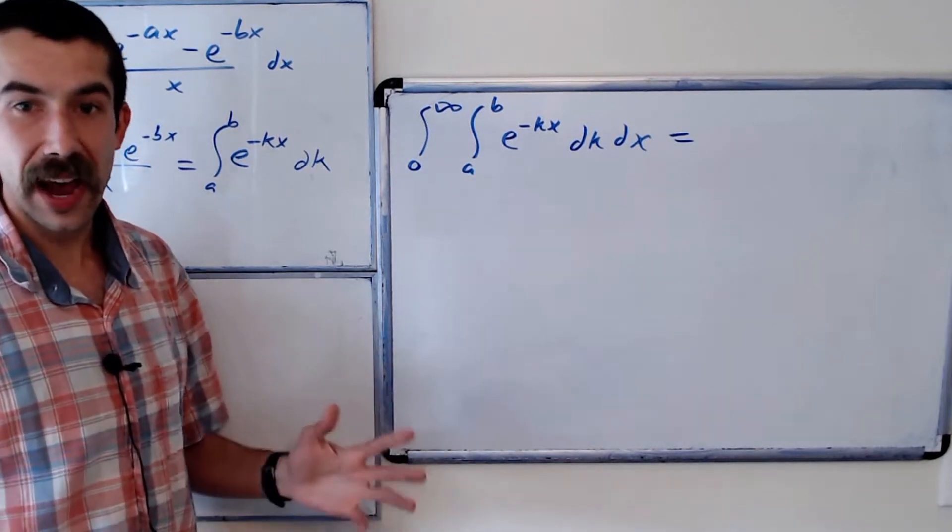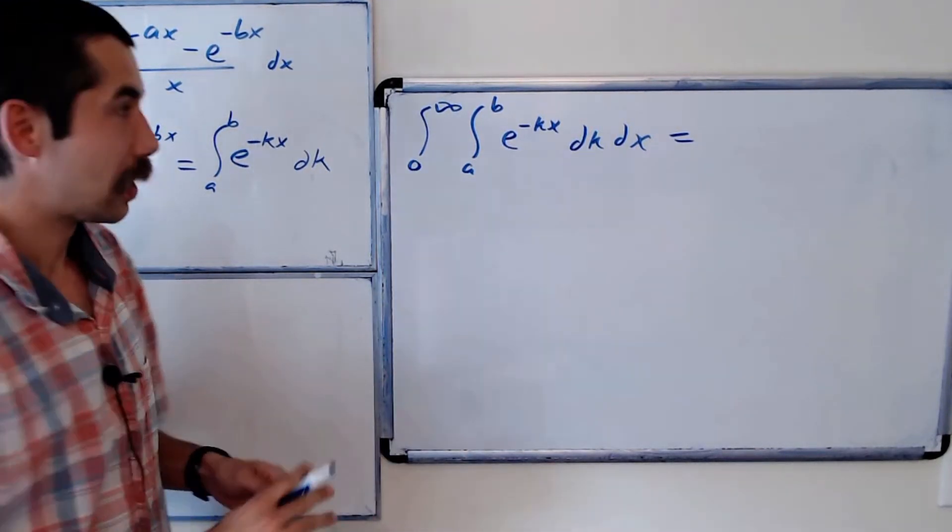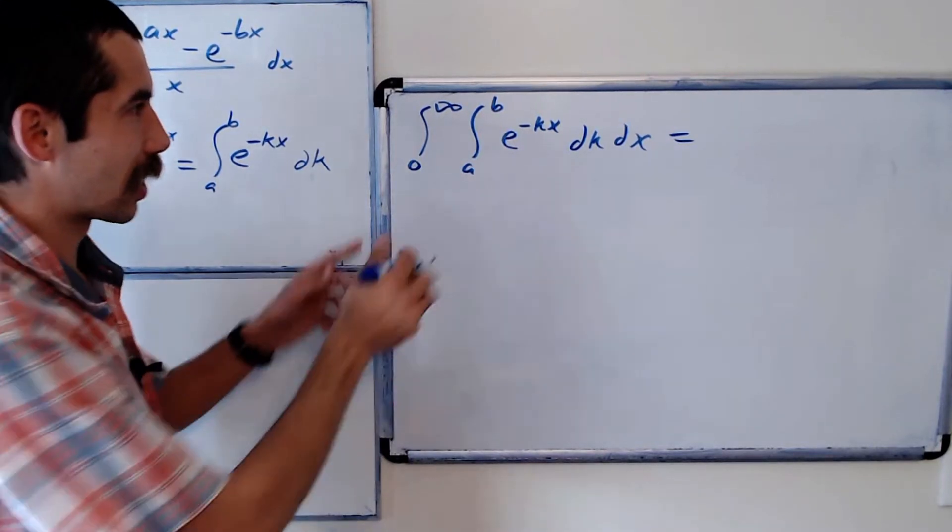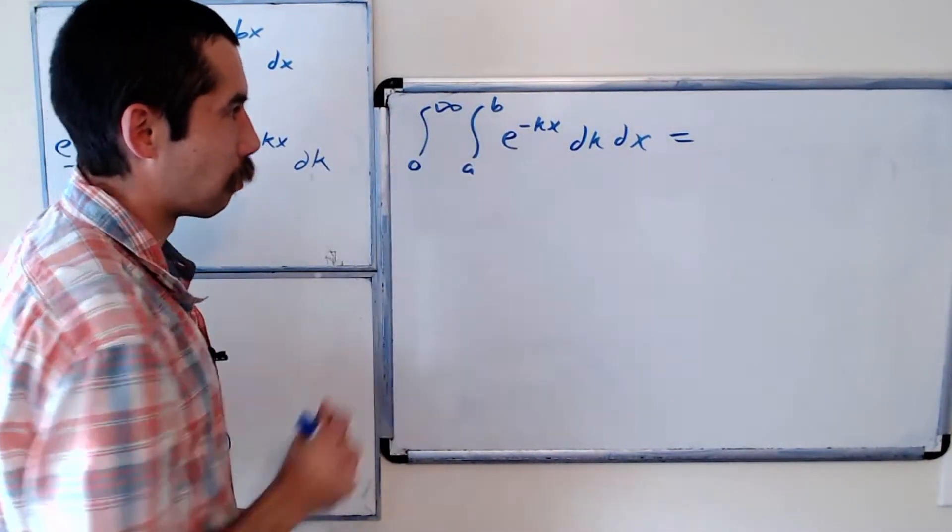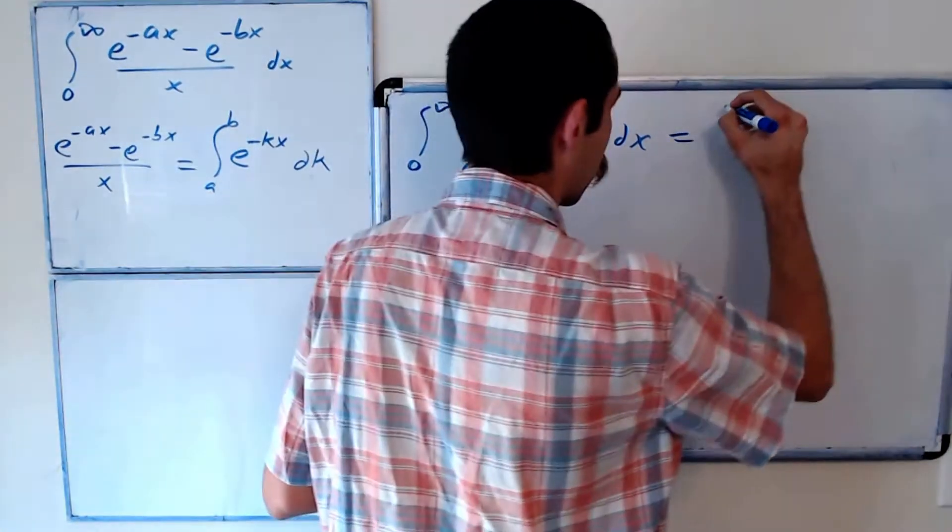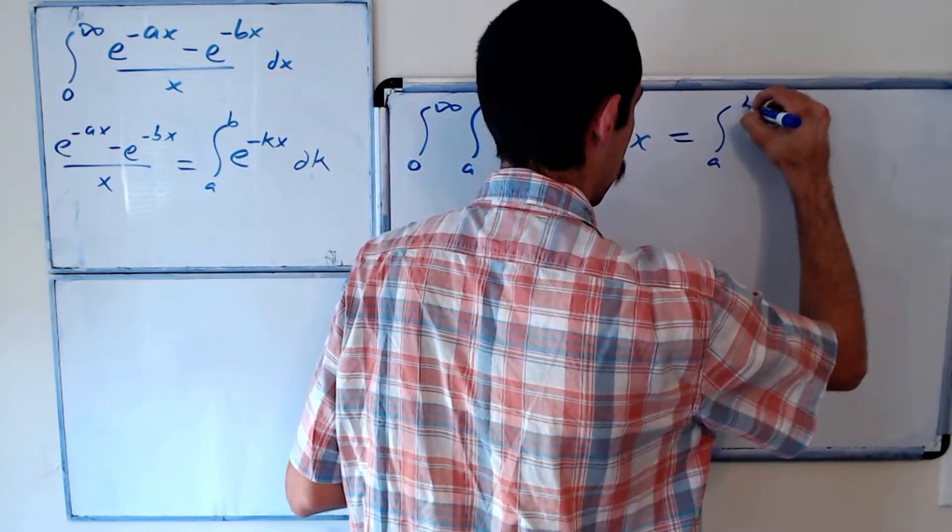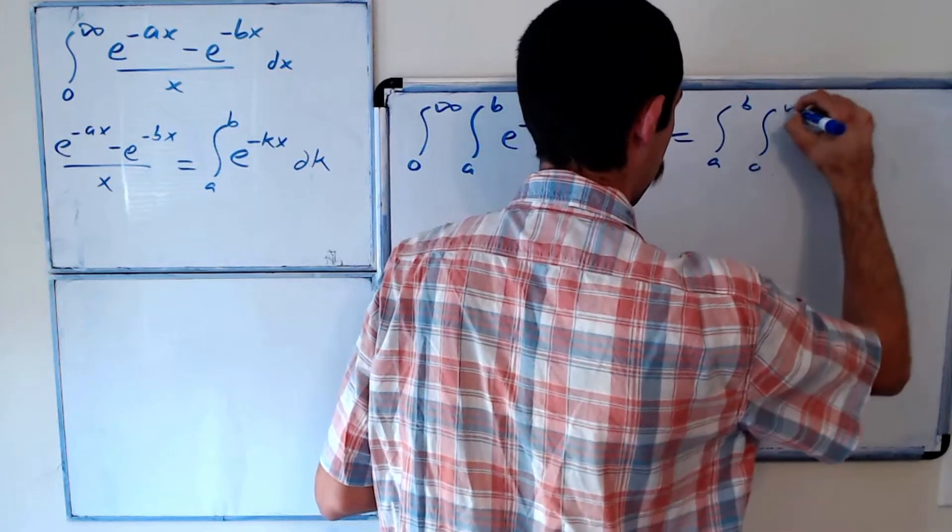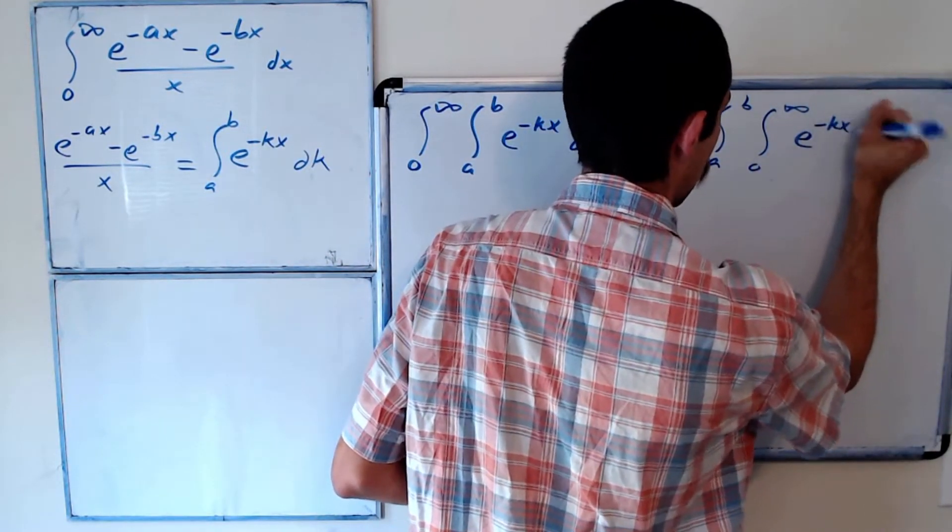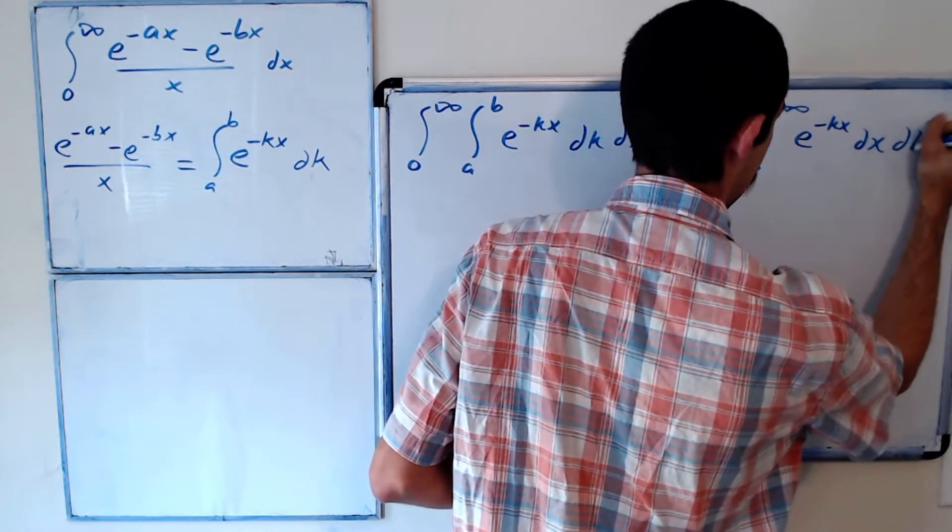And a life hack that you learn in calc 3 is you can switch the order of integration. As long as one of the variables isn't one of the bounds, which it's not, we could switch the order of integration. So it's the integral from a to b, integral from 0 to infinity of e to the negative kx dx dk.